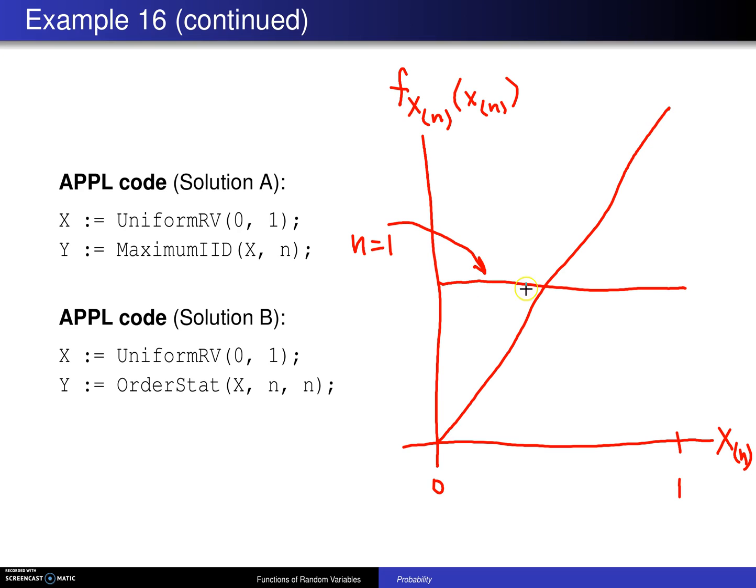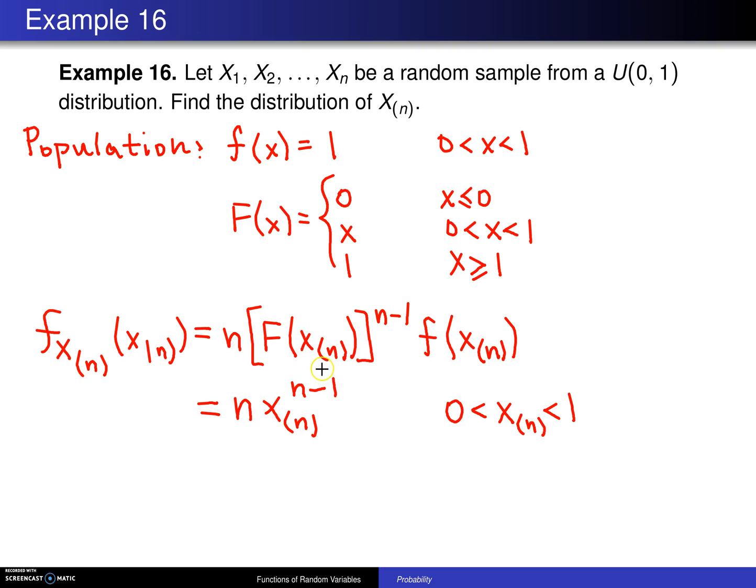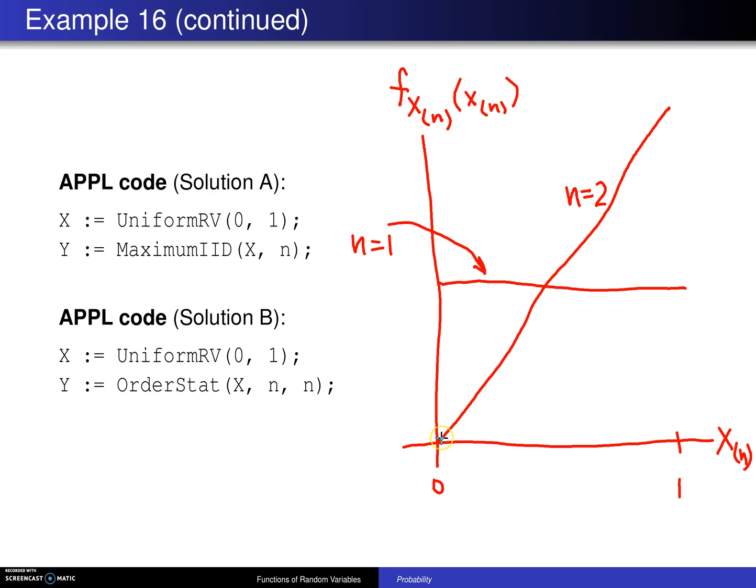Notice that the area underneath all of these is still 1, and let's do one more. So this one here corresponds to the largest of two uniform 0, 1s. Then if you go back here and look at the largest of three uniform 0, 1s, you'll have 3 times xn squared. Well, 3x squared is a parabola. It looks something like that.